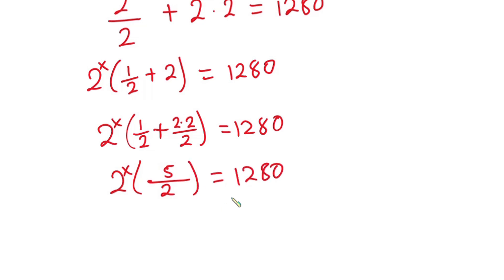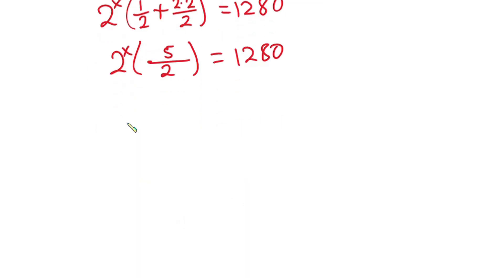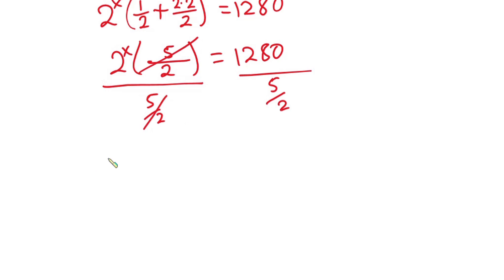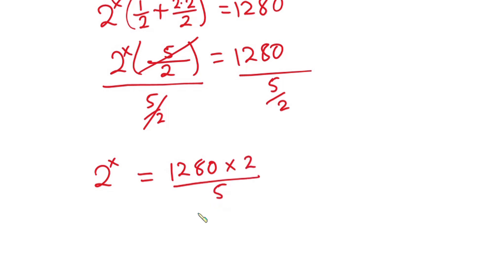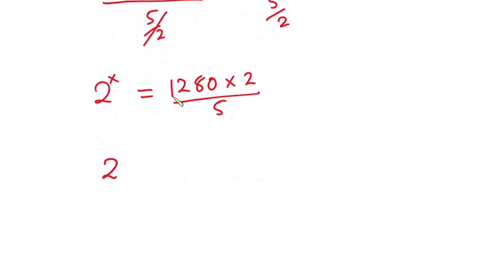We want to find the value of x, so divide each side by 5 over 2. Dividing by 5 over 2 is the same as multiplying by 2 over 5. So 2 to the power x equals 1280 times 2 divided by 5. That gives us 1280 times 2 equals 2560, divided by 5.